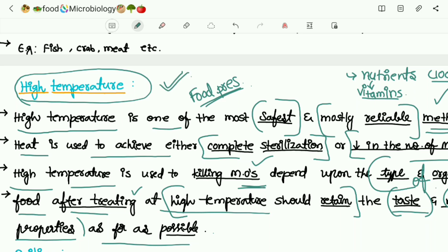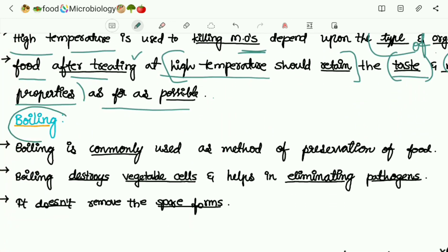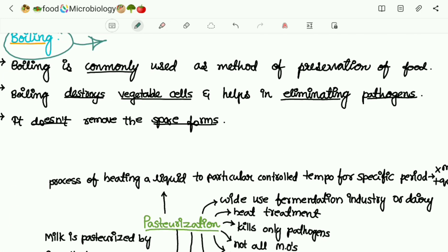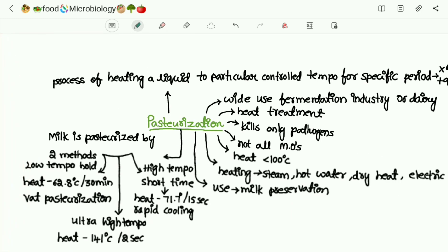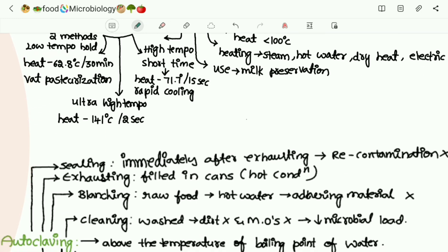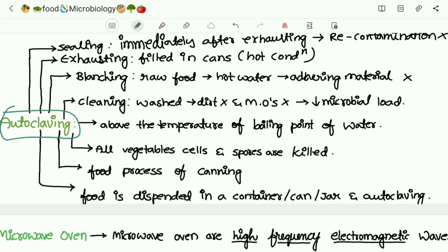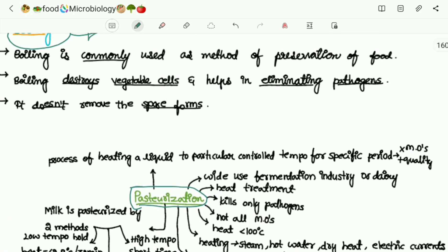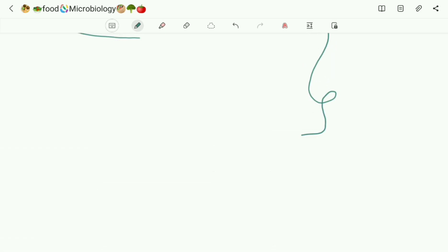The next method is boiling. We will discuss this boiling method in the next video because this is a long topic and consists of three sub-topics: preservation, autoclaving, and microwave oven. We will discuss this in great depth.